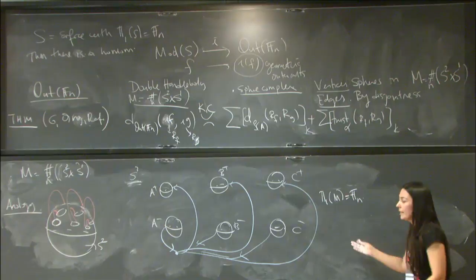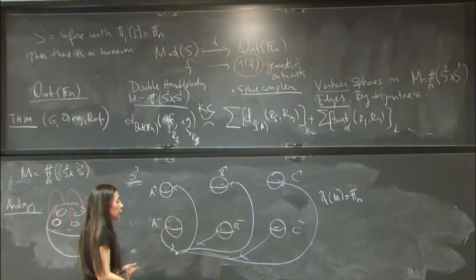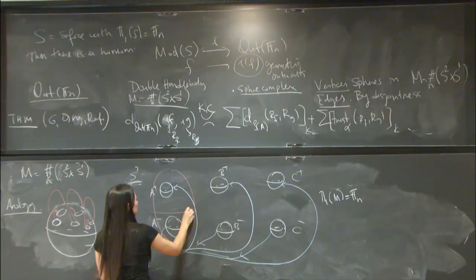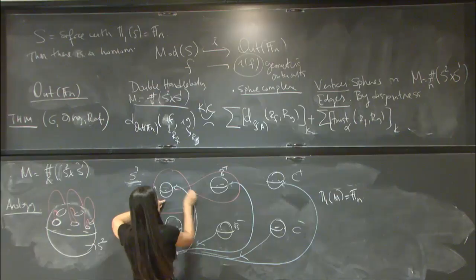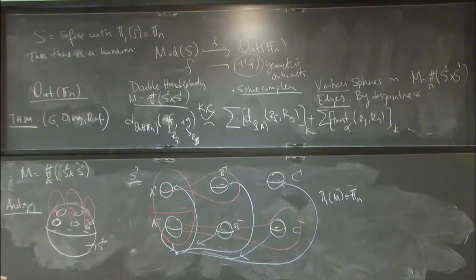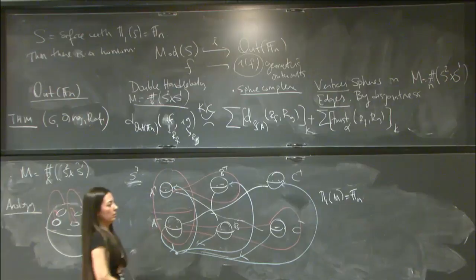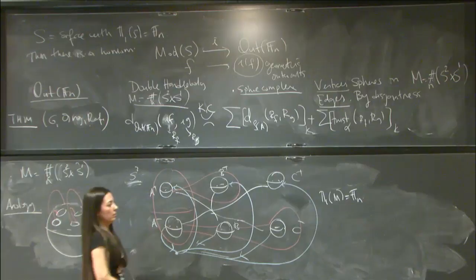Why is it called the double handlebody? There are non-trivial spheres in this manifold — you cannot squeeze them to a point. You can draw very complicated spheres going between the identified regions. The sphere complex comes from this: homotopy classes of spheres as vertices and disjointness for edges. You can also see graphs here — you can draw roses, et cetera. Another picture: take a surface with one boundary component, thicken it to a handlebody by crossing with an interval, then an arc becomes a disk. Take another copy and identify the two boundaries — you get a double handlebody. Gluing two disks gives a sphere.